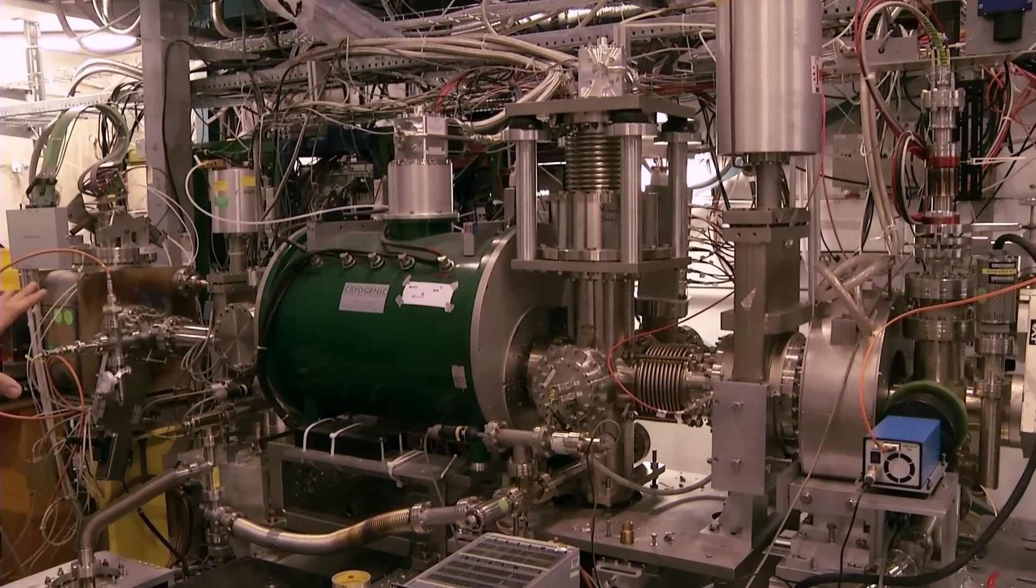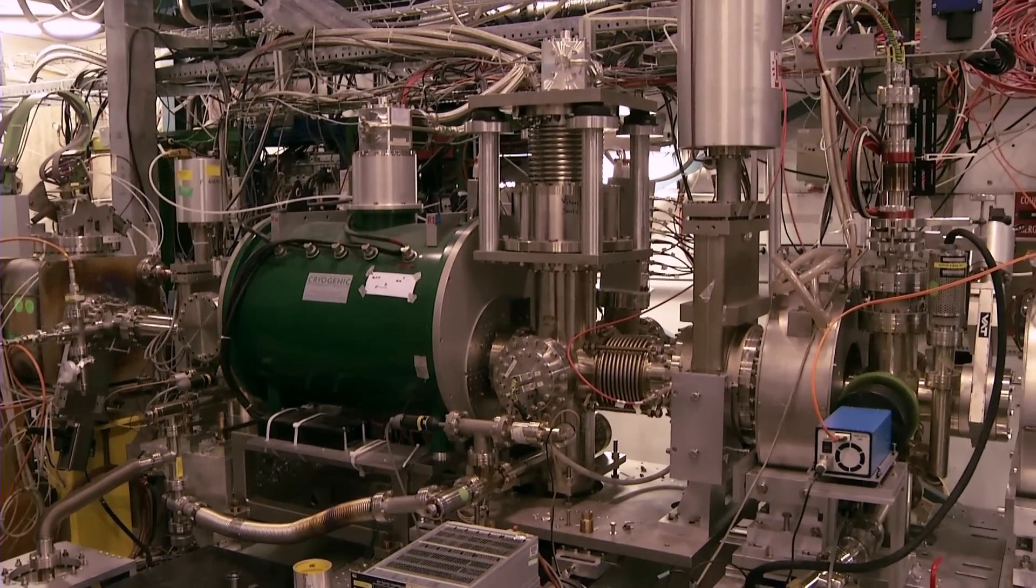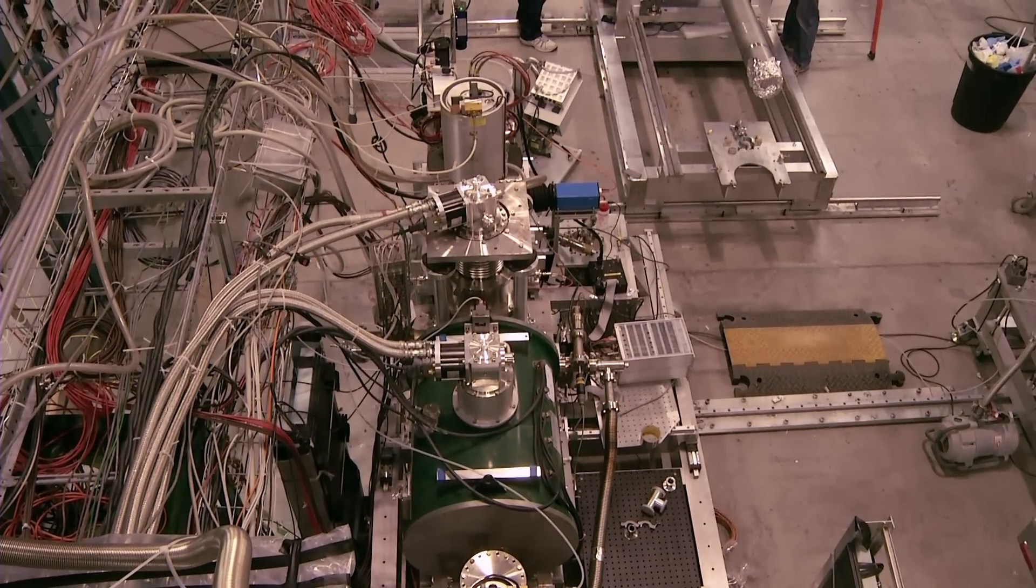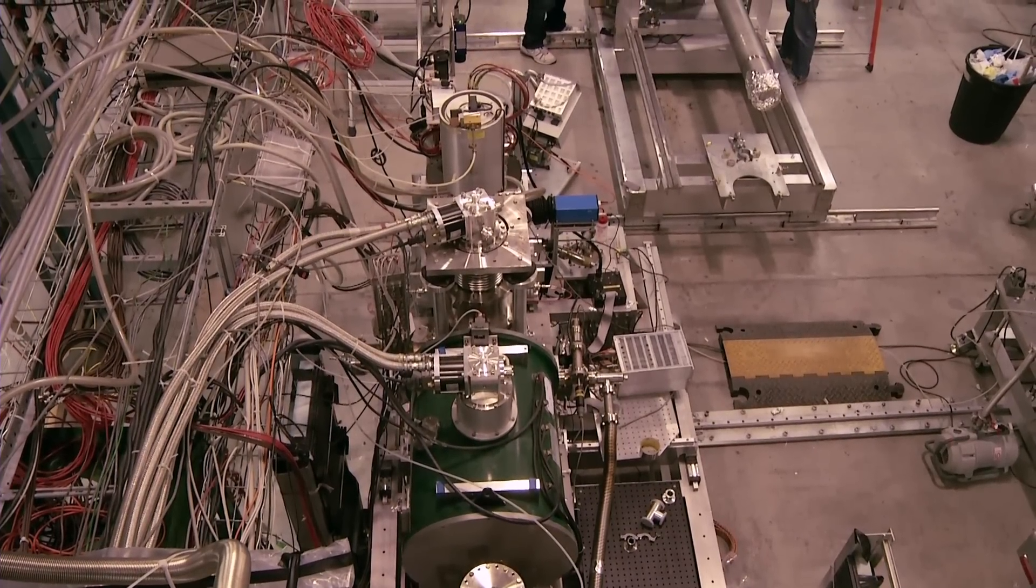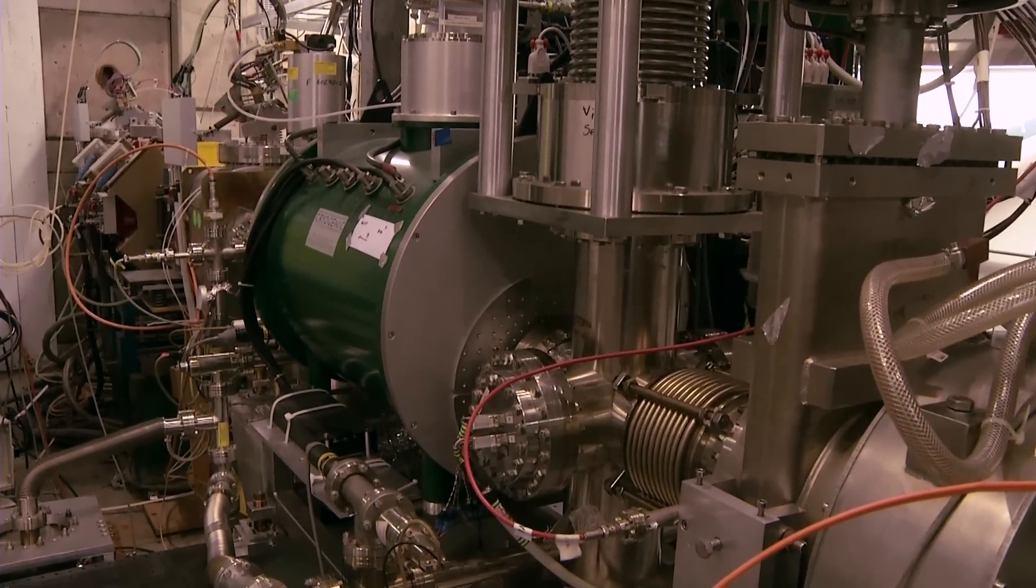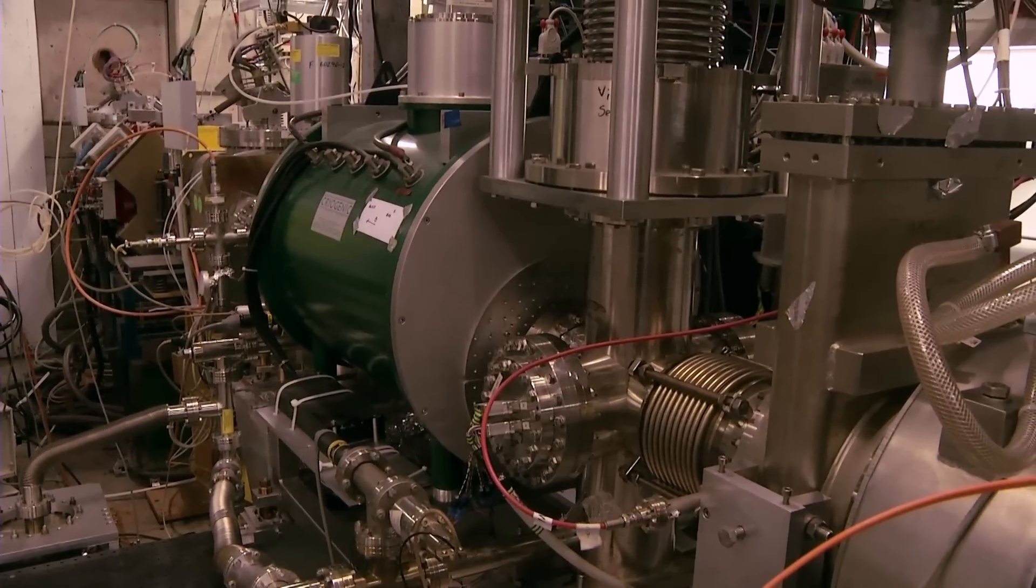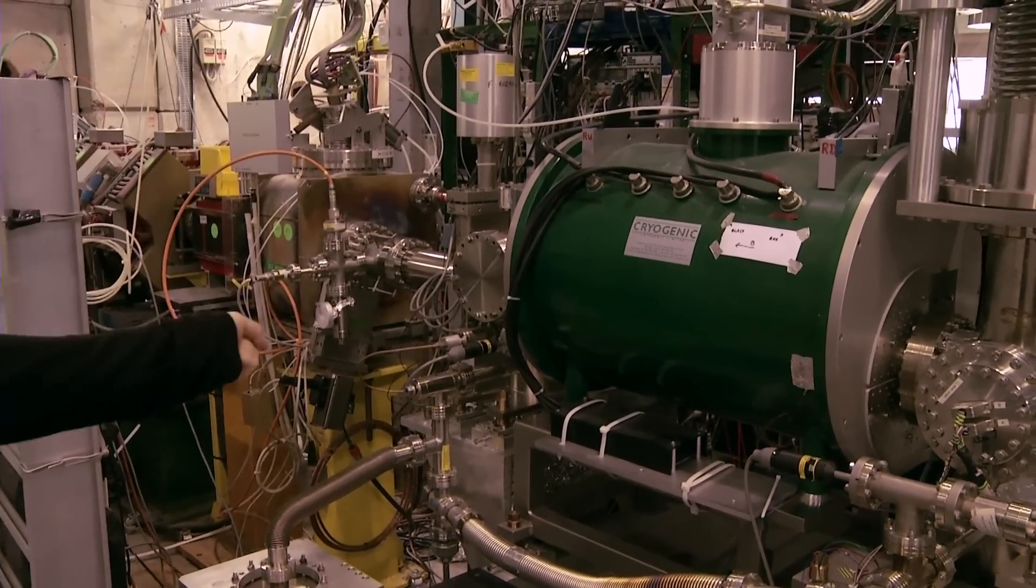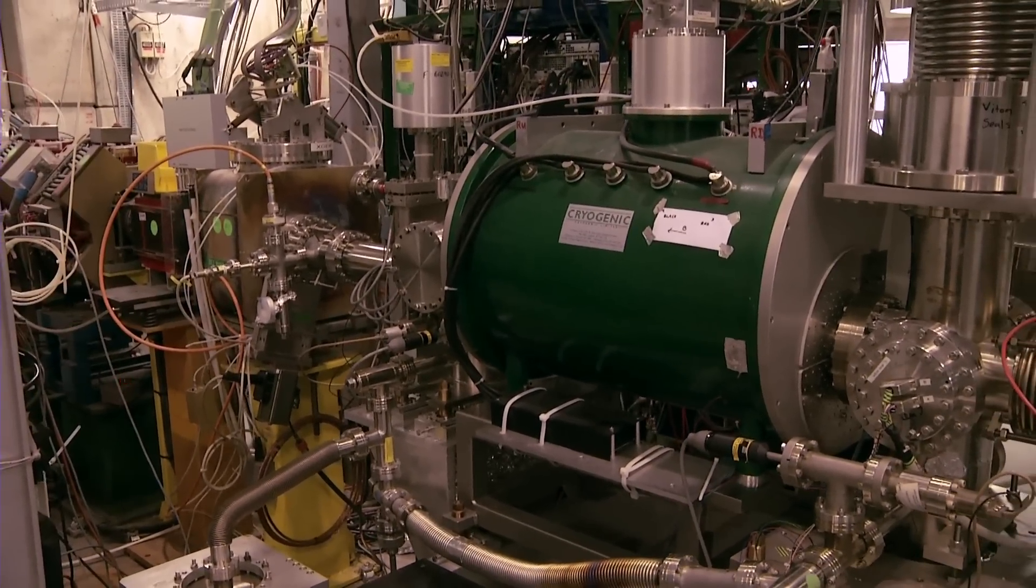This is the catching trap where we stop and catch the antiprotons that come to us from the antiproton decelerator. Every 100 seconds we get a shot of antiprotons, about 30 to 40 million. They go into this magnet. There's a charged particle trap inside there. They get stopped and cooled down and held in a very good vacuum.